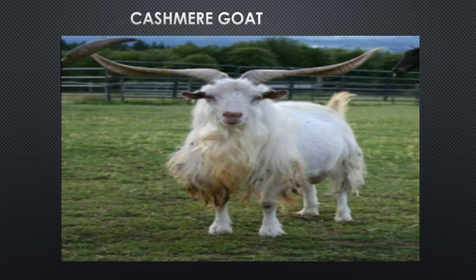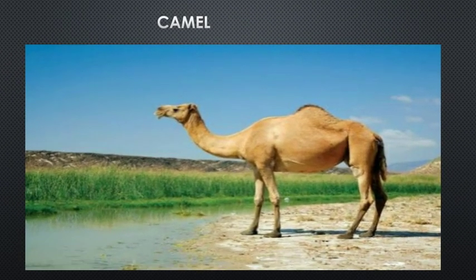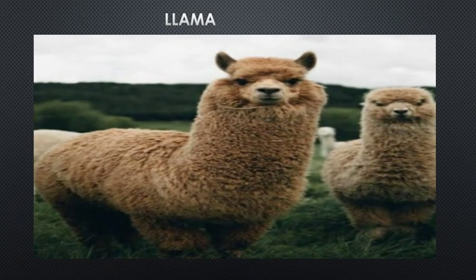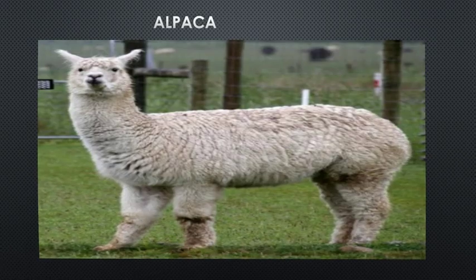Cashmere wool is obtained from the bellies of cashmere goats found in Tibet and China. This wool is one of the most expensive, extremely soft and easy-to-dye wools. Next is camel wool. The fur on the body of a camel is also used as wool and is sometimes left in its original colour because of its natural beauty. Llama and alpaca are animals of the camel family found in South America, and they also yield wool which is soft and warm.